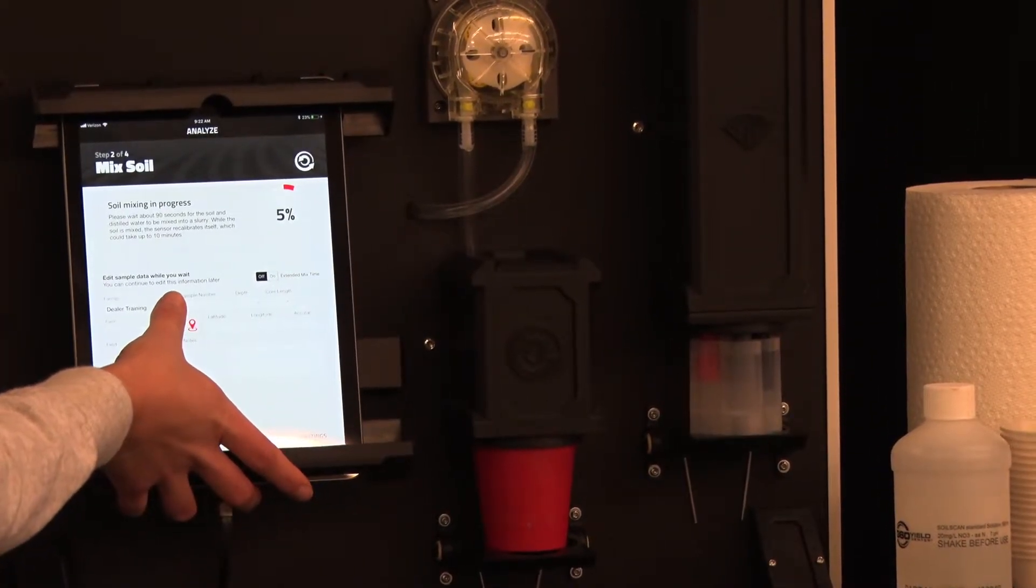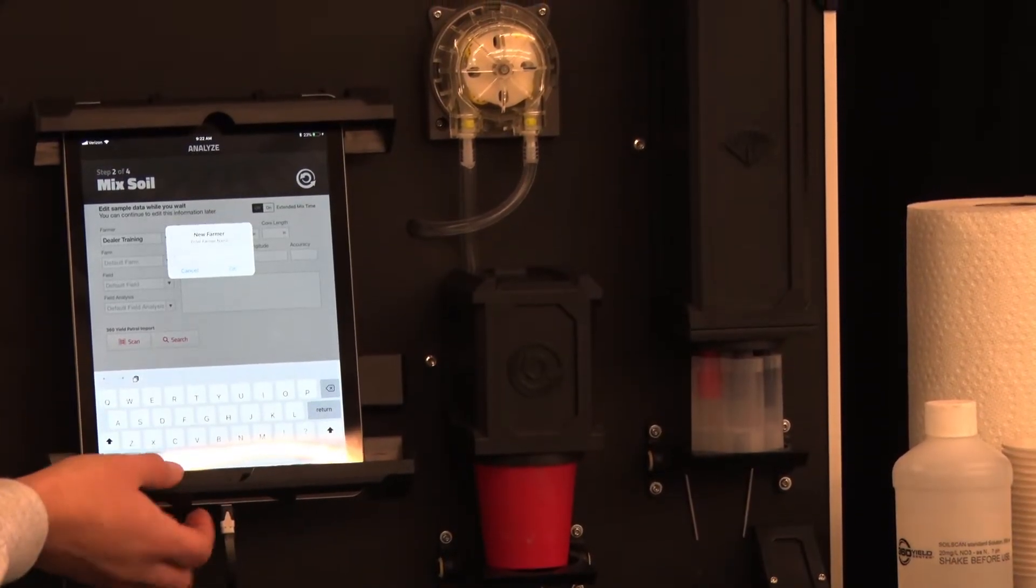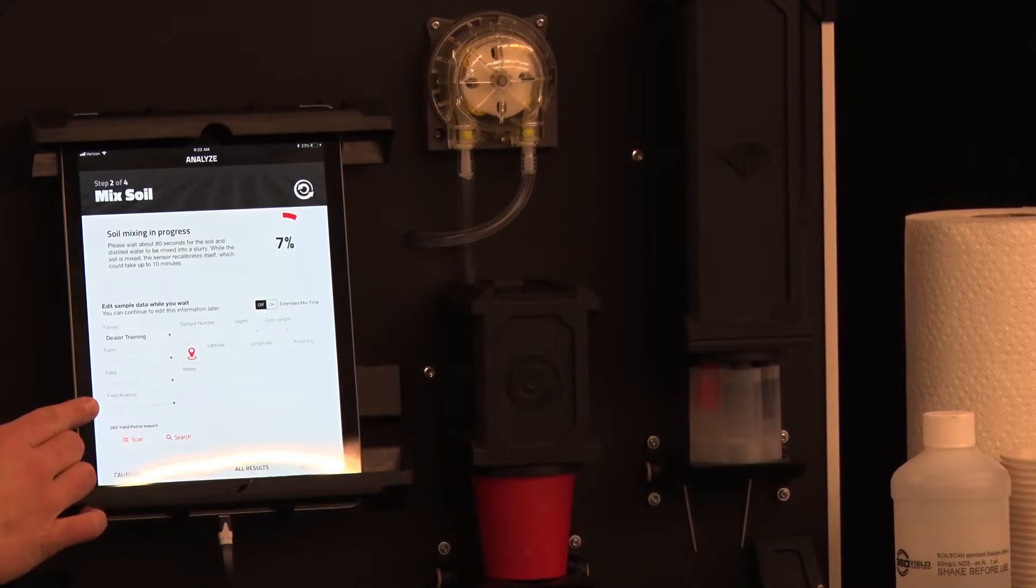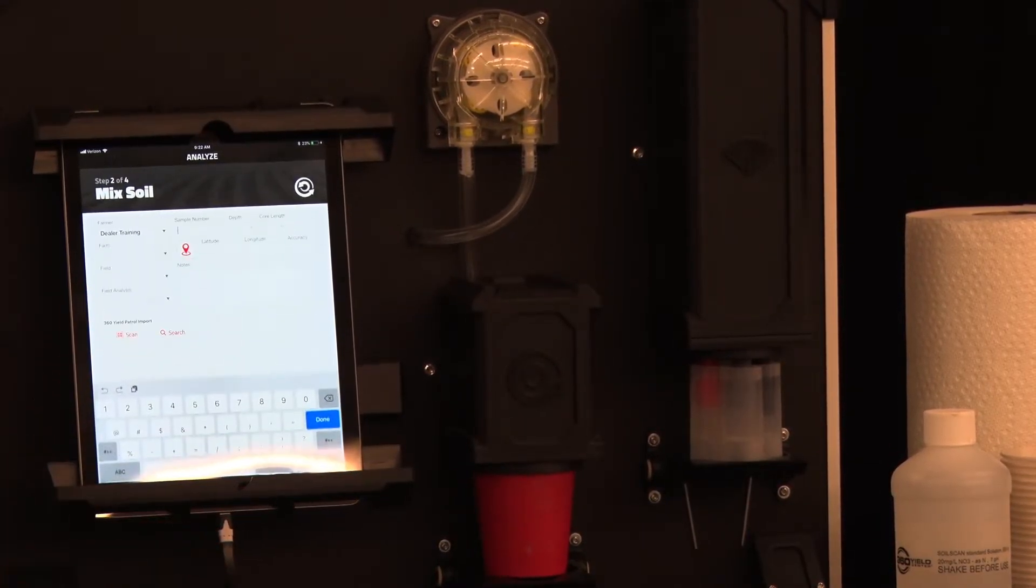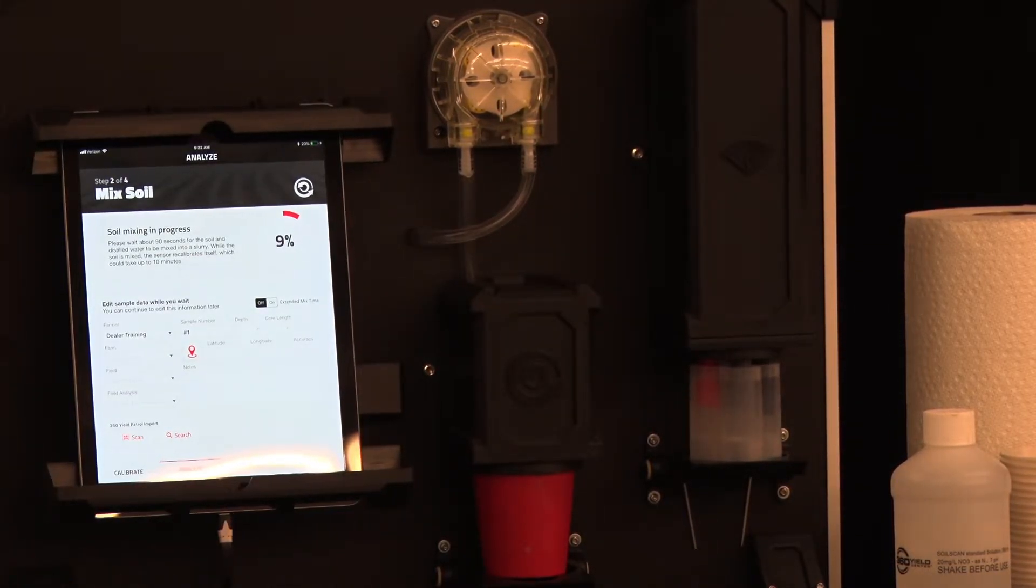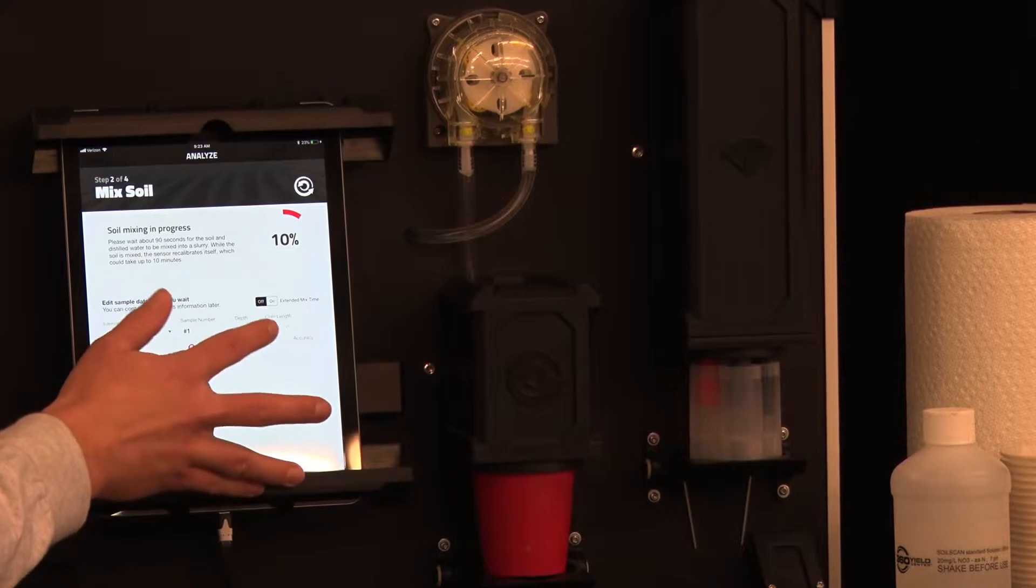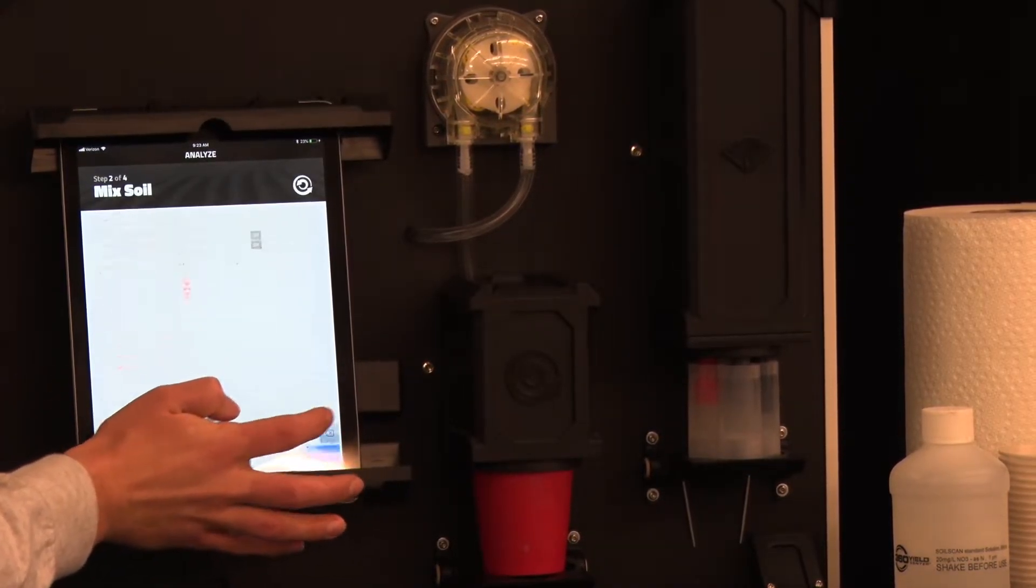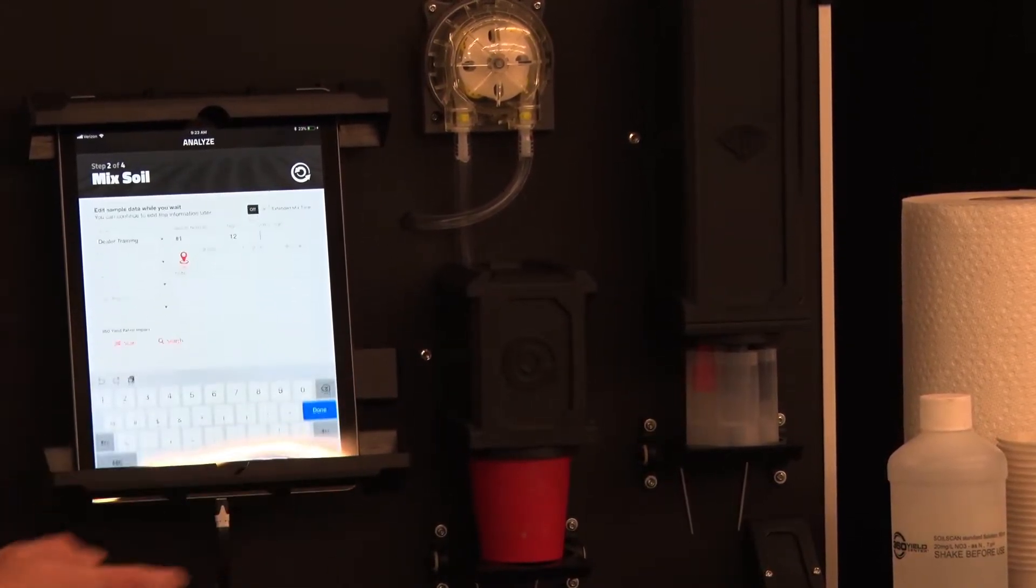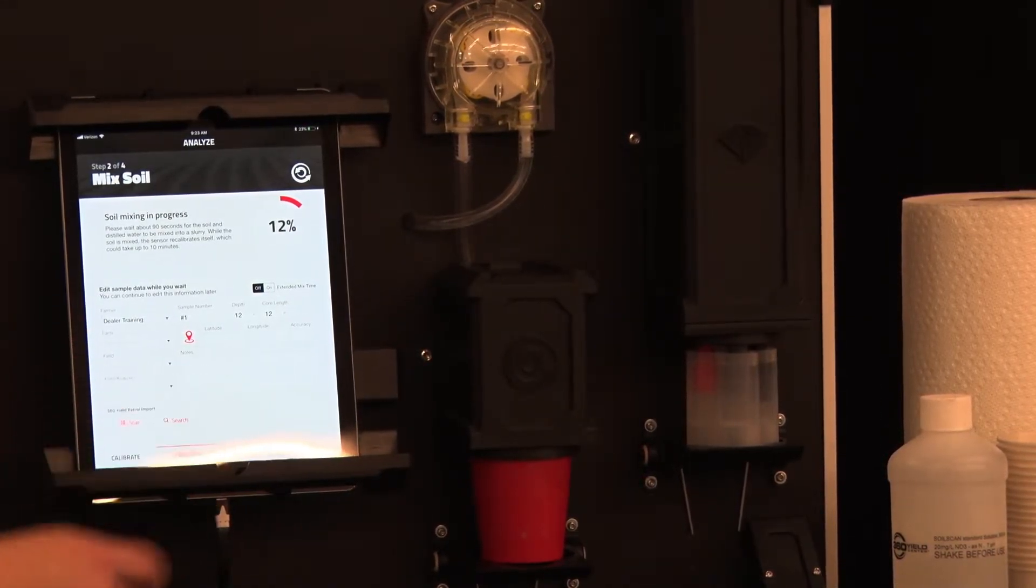On the left side of the screen you can select your farmer, select add and type in the name. You can select a farm, a field, and field analysis. You'll also want to give your sample a number. The depth is the depth of the sample that you took. If you probe 12 inches deep then you would put 12 here. The core length is going to be how much of that that you used. So in this case we'll say that we used all 12 inches of that sample. You can also enter any notes that you have.